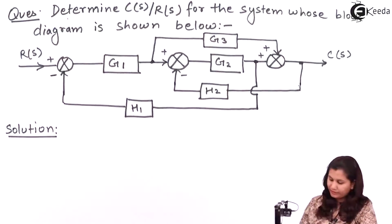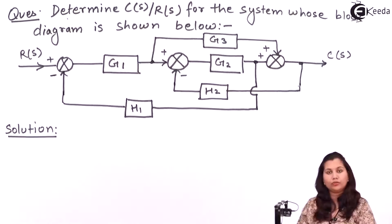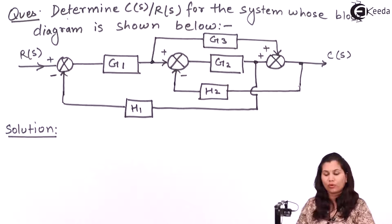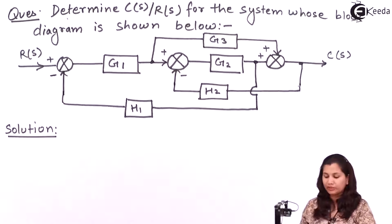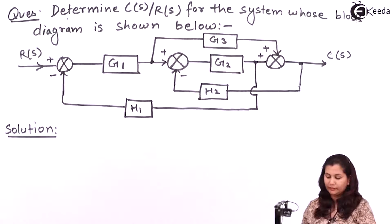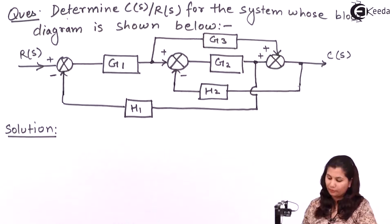If we see this block diagram, we can see that there are no blocks which are in series or in parallel combination. So we have to move the summing points or the takeoff points so that the blocks come in parallel or series combination.